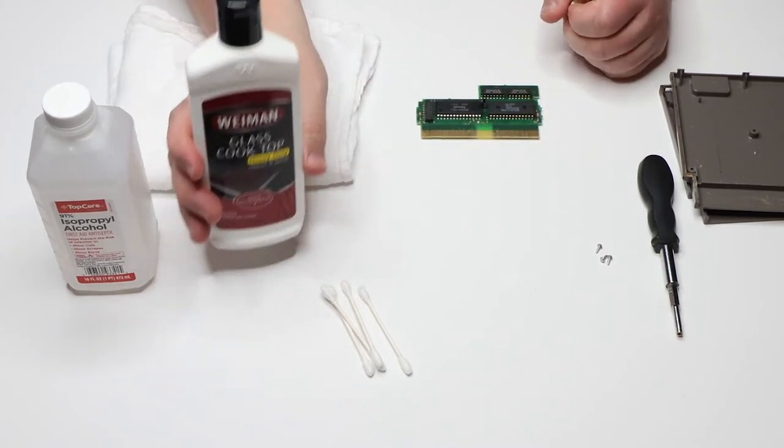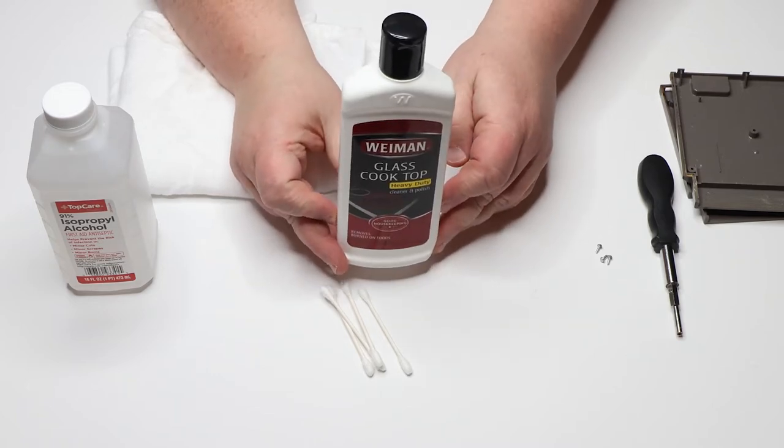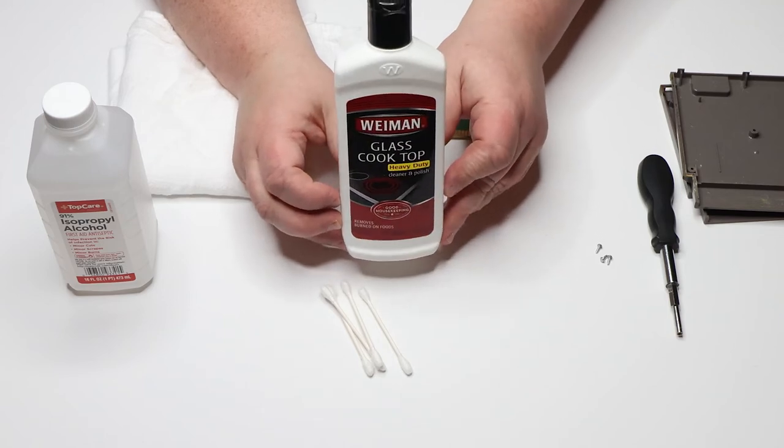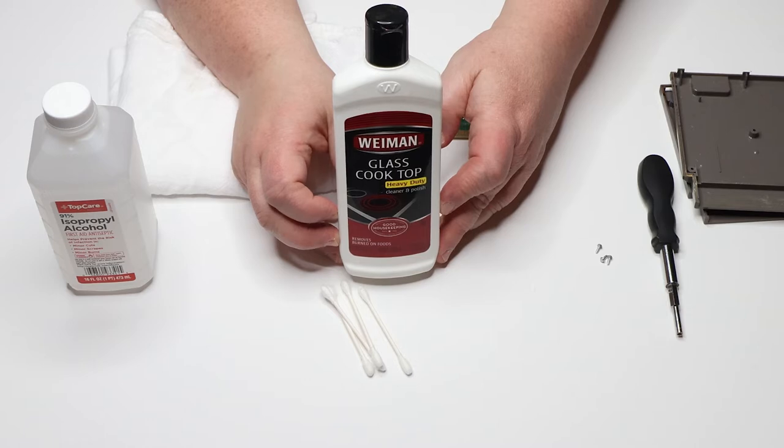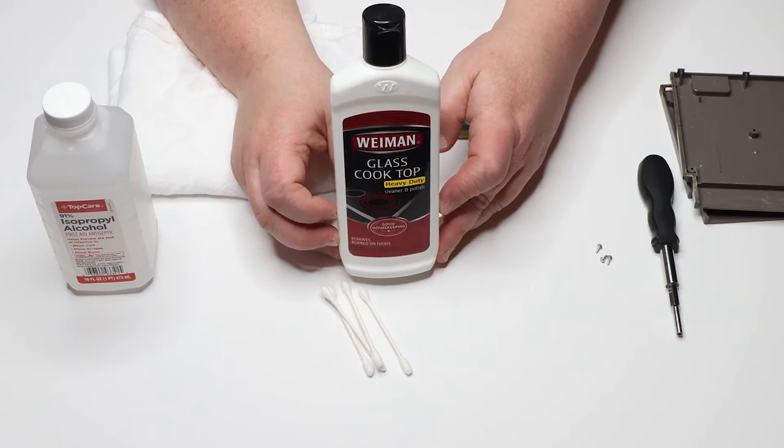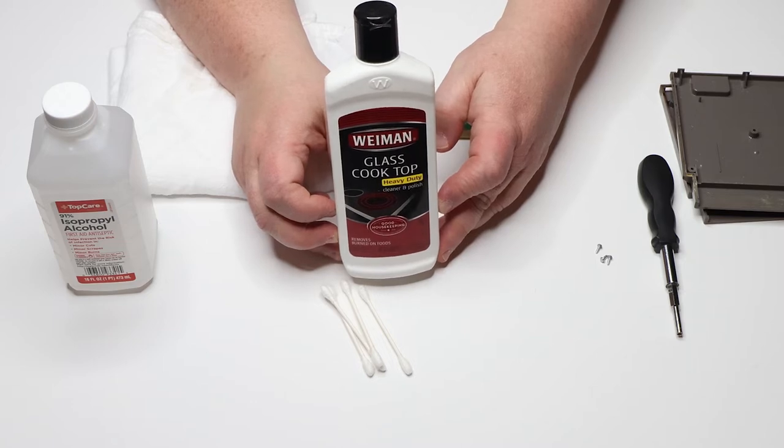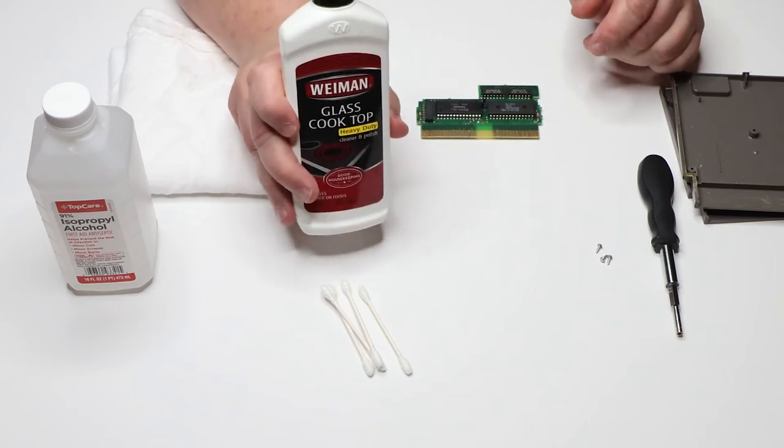Here we're going to take our Wyman's glass cooktop cleaner. Again, you can get this in most grocery stores, but if you would like to shop online, I'll leave a link in the description where you can purchase this on Amazon. And again, like I said, full disclaimer, I am an Amazon affiliate. If you choose to pick up some Wyman's, I do earn a small commission for each sale.